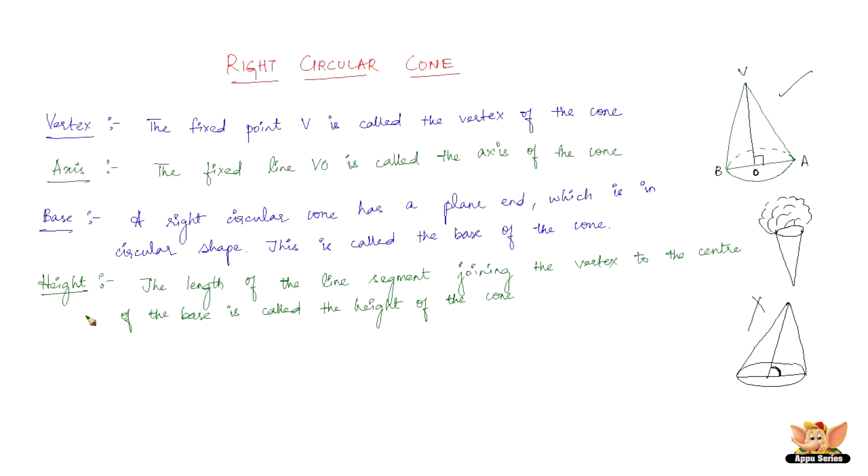The next term is the height. The length of the line segment joining the vertex to the center of the base. The vertex is V and the center of the base is O. So the length of this line segment is called the height of the cone.